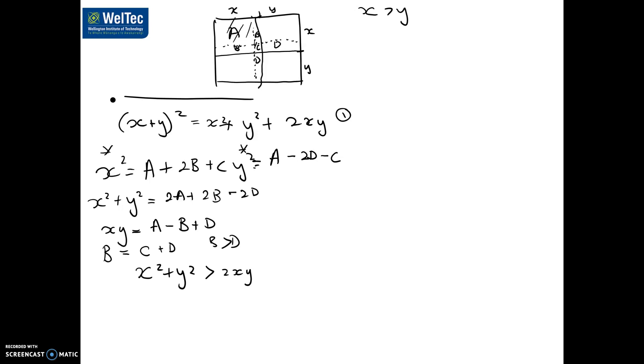If x is equal to y, then from the diagram, then those little boxes, the dotted lines, are going to be the same as the solid lines. So D is going to equal B, which is nothing because they won't be there. So then x squared plus y squared is equal to 2xy. So if we put this statement together with this statement, we would have that x squared plus y squared is greater than or equal to 2xy. Call that statement 2.